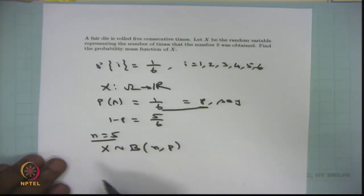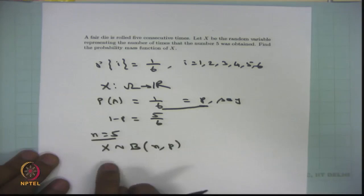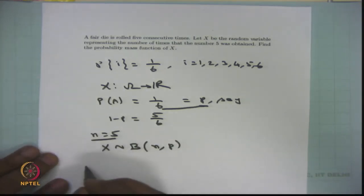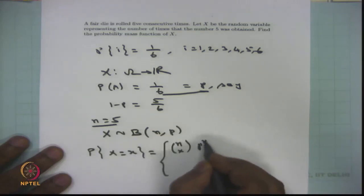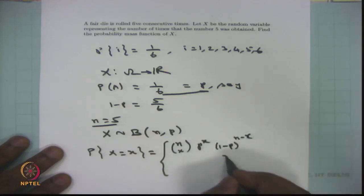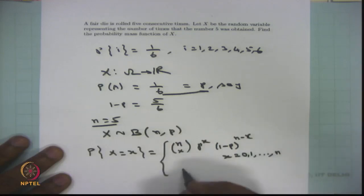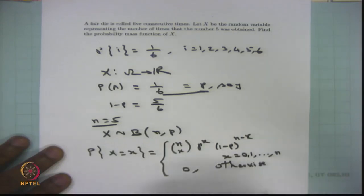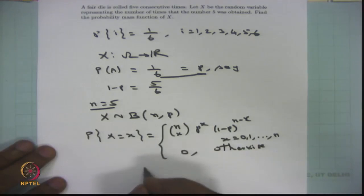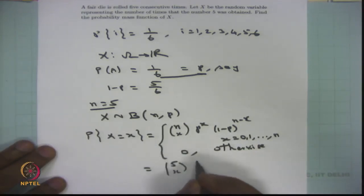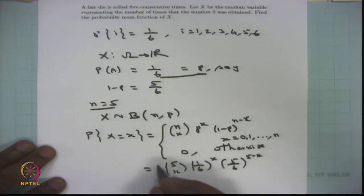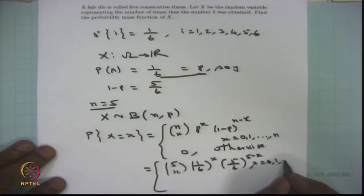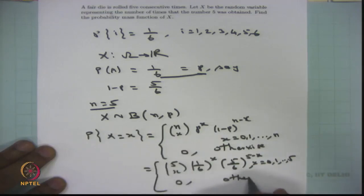The question is to find the probability mass function of X. Since it follows a binomial distribution, the PMF is: P(X = x) = nCx · p^x · (1−p)^(n−x), for x = 0, 1, ..., n, and 0 otherwise. In this problem, it becomes: P(X = x) = 5Cx · (1/6)^x · (5/6)^(5−x), for x = 0, 1, 2, 3, 4, 5, and 0 otherwise.